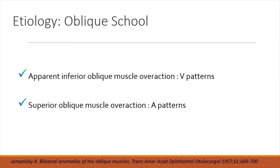These children, when they come to your OPD, are going to have characteristic head postures, because they keep their eyes in the position of gaze where they fuse maximally or their squint is minimal. Children who have V esos are going to be chin down, because in upgaze their eso is minimal. Likewise, in V exos, the kids keep their heads up, because in downgaze their exo is minimal.